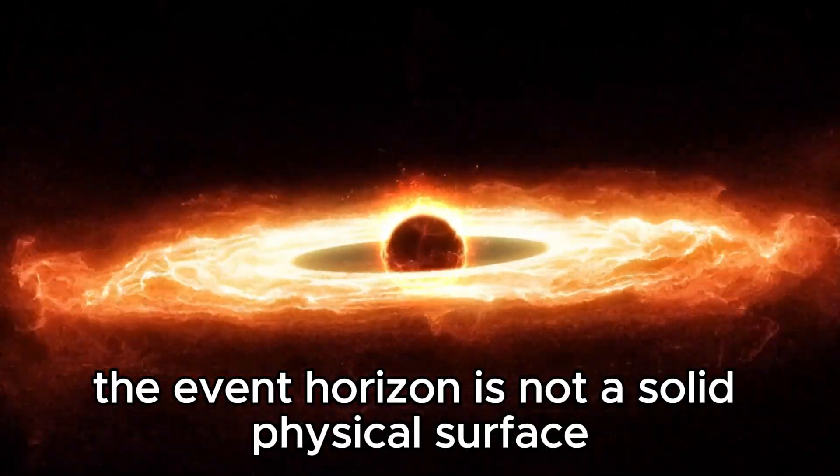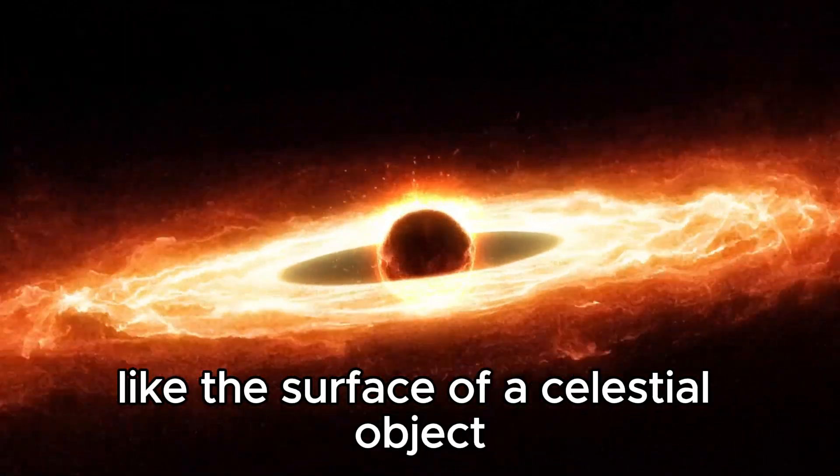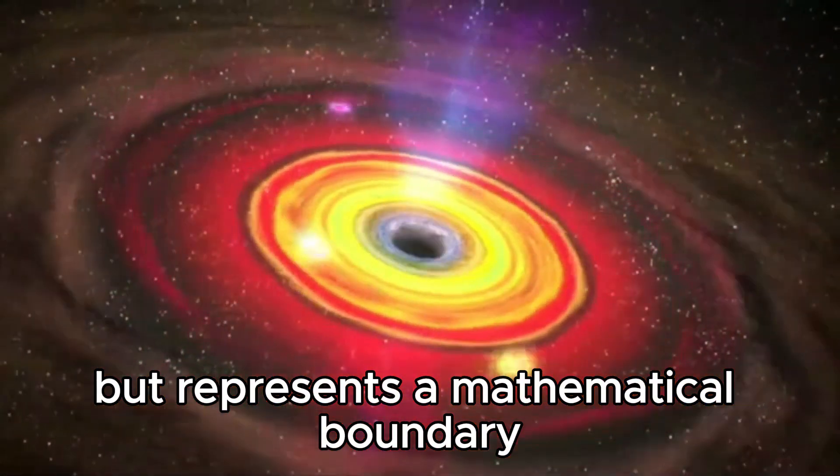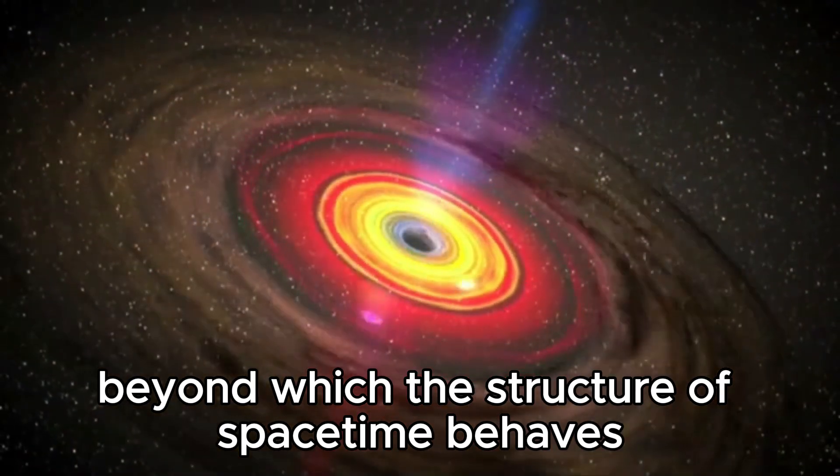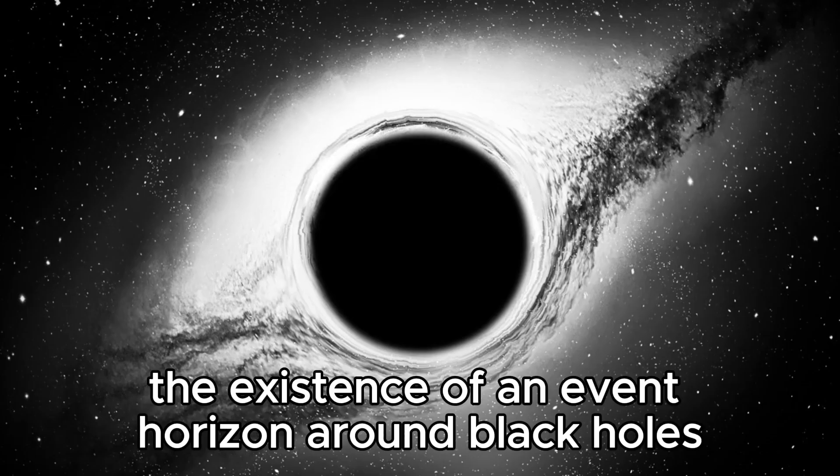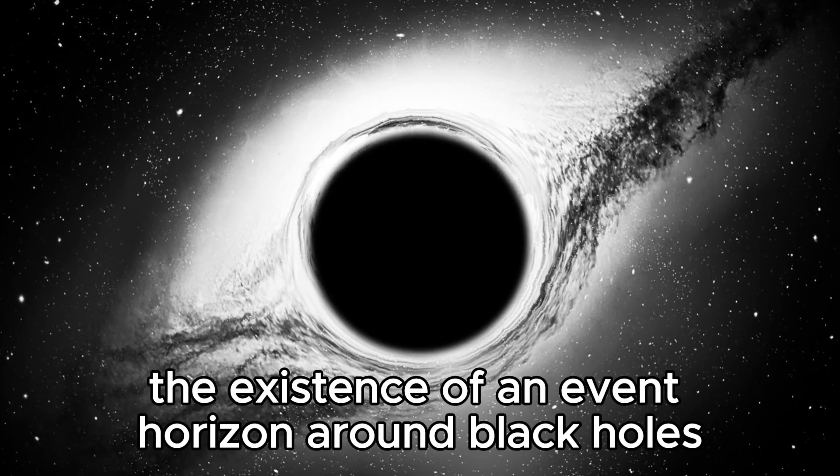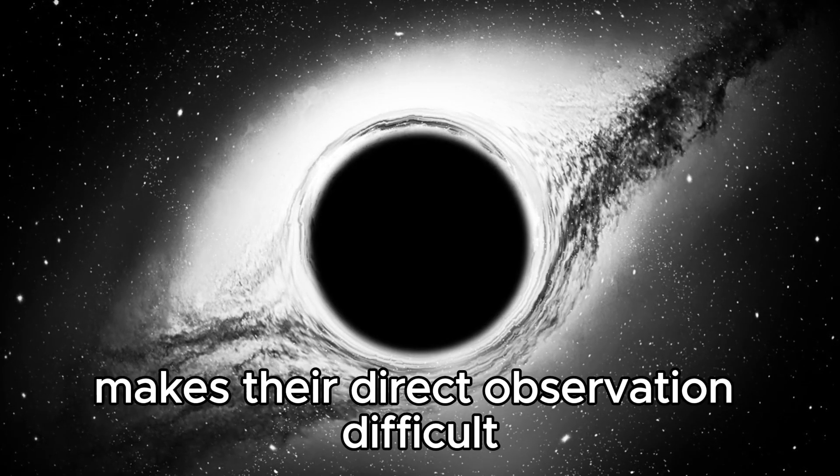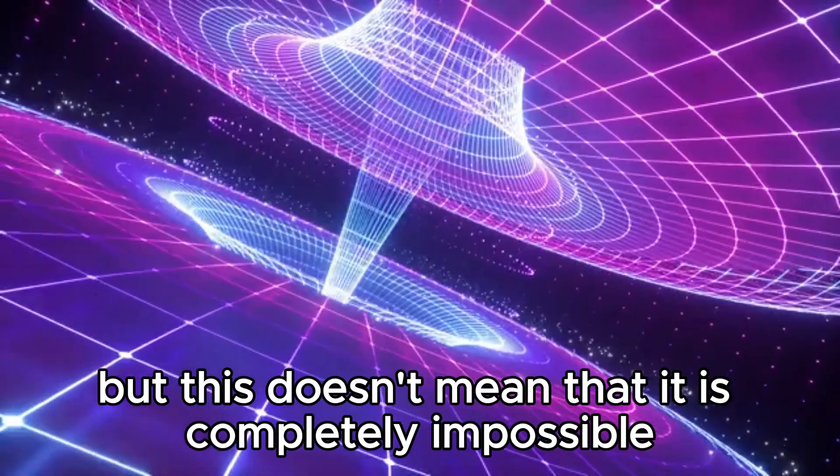The event horizon is not a physical surface like the surface of a celestial object but represents a mathematical boundary beyond which the structure of spacetime behaves in a way that challenges our intuition. The existence of an event horizon around black holes makes their direct observation difficult, but this doesn't mean that it is completely impossible.